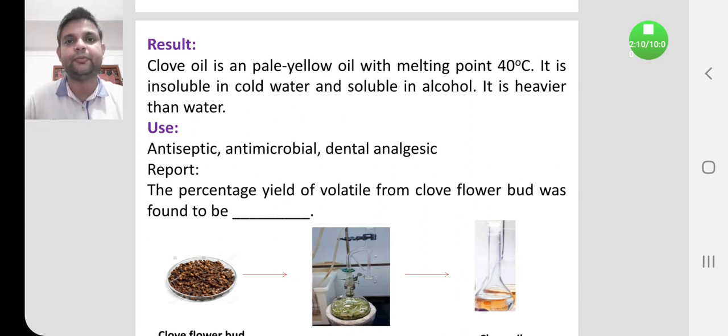Suppose we have taken 50 grams of clove flower bud and we obtain around 6 ml of volatile oil. From 50 grams of clove flower bud, 6 ml of volatile oil is obtained. From 100 grams, around 12 ml of volatile oil is obtained, so the percentage yield is 12%. Like that, we have to calculate the percentage yield and report it.